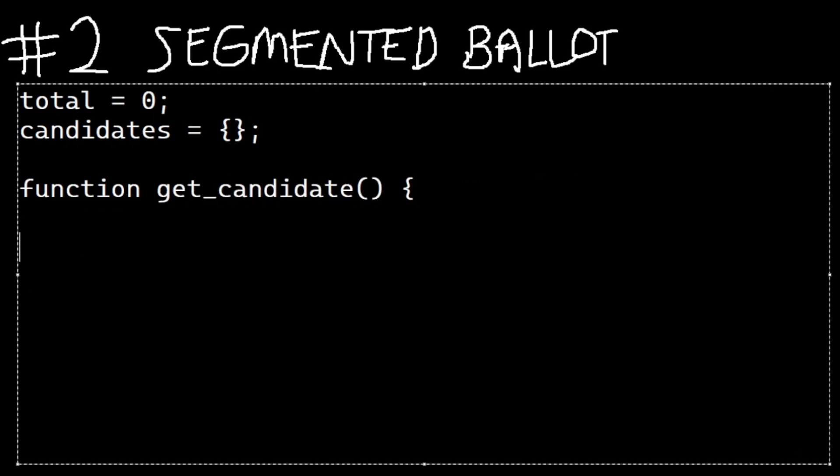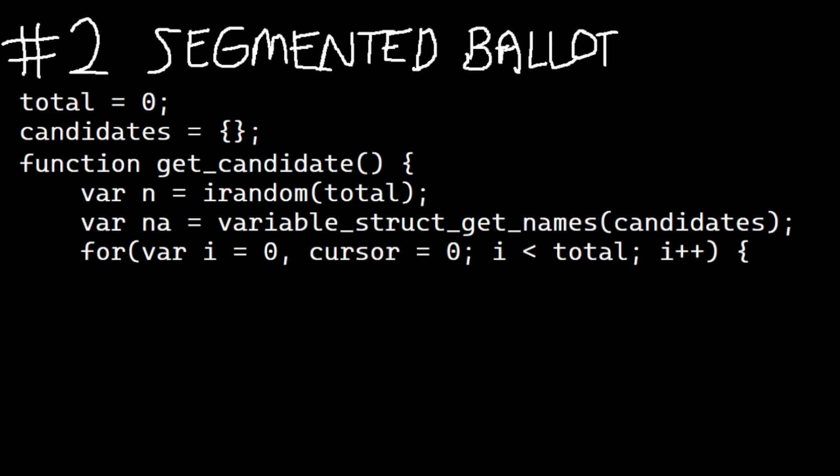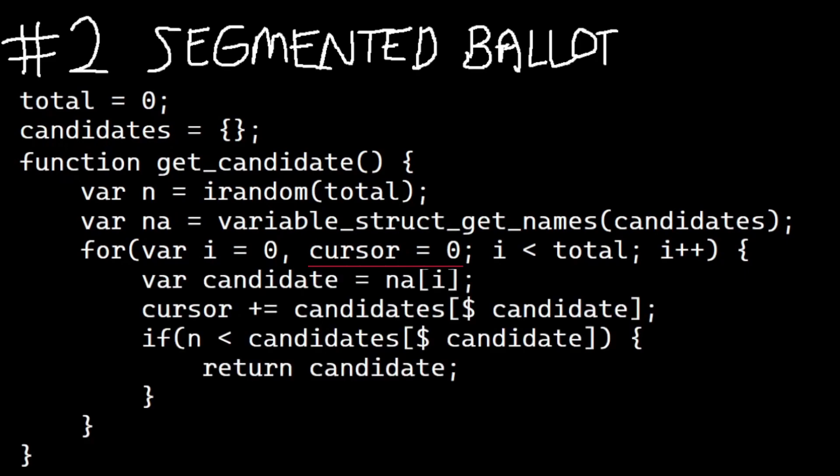When it comes time to select an enemy type, a winner, all we have to do is select a random number between 0 and our running total. Then we iterate over our tallies entries in a for loop, and we are going to be keeping a cursor each time we iterate. So every time we iterate, we move our cursor up by the total number of votes, the length of the string or segment for that candidate. And then we just check if the random number we generated is between that cursor and this candidate's votes. And we actually just have to check if it's less than, because we are iterating upwards. So if it is less than the cursor, that is our winning candidate.